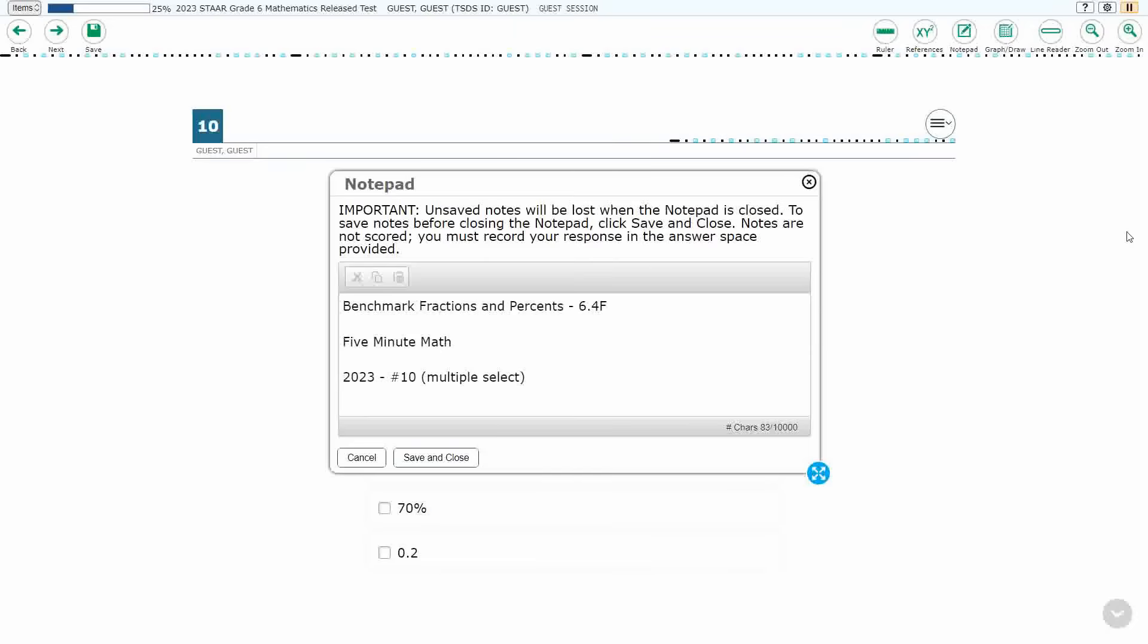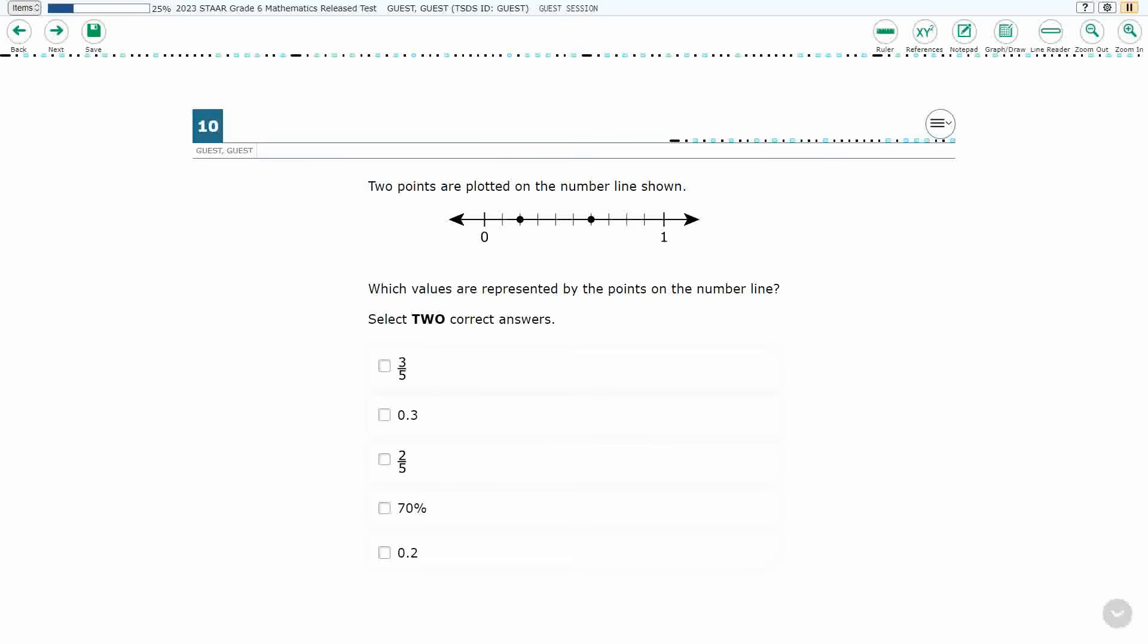Hello, and welcome to 5-Minute Math. Today we are looking at the 6th grade concept of benchmark fractions and percents. This is Standard 6.4F in the great state of Texas, and we are using item number 10, a new item type called Multiple Select, of the 2023 released STAR test.